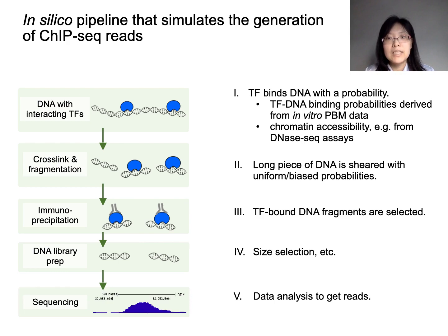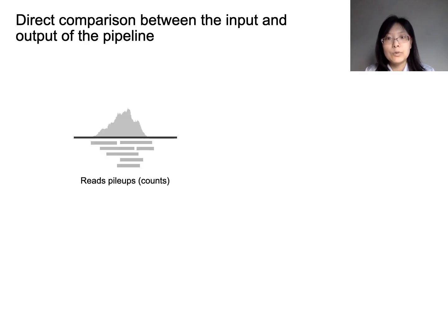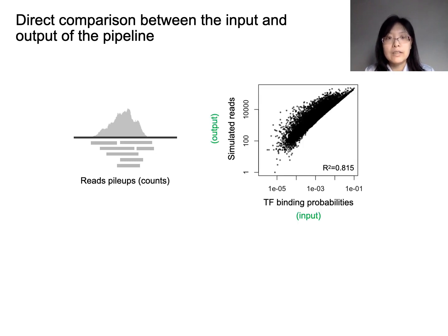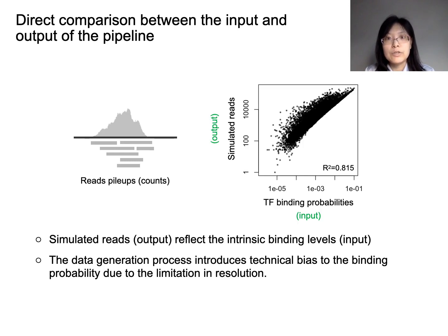To answer how binding information flows through these steps, we made direct comparisons between the input, which is the binding probability, and the output of the pipeline, which are the simulated reads. We used reads pileups to quantify the binding level and make the output reads comparable to the input. We observed a decent correlation. However, the simulated experimental procedures introduced some technical biases that caused the reads pileups to deviate from the input probabilities.